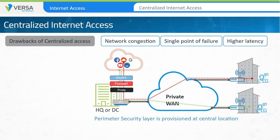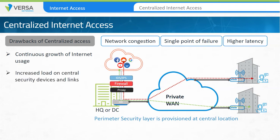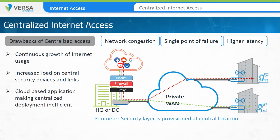First, we'll look at network congestion. Internet usage continues to expand at exponential rates. Computing power and file sizes continue to grow, which places an increased load on centralized security devices and WAN links. Due to the traffic shift towards internet destinations and internet-based services, the requirement that all internet traffic be forwarded across the WAN to a centralized site makes this design inefficient. It creates congestion on WAN links and on centralized security services.